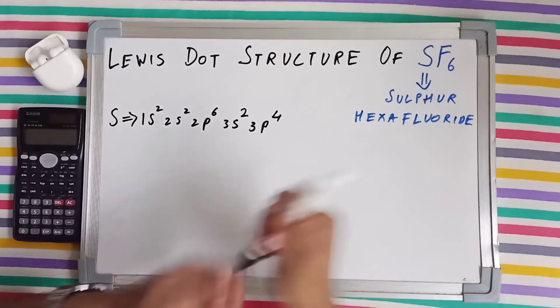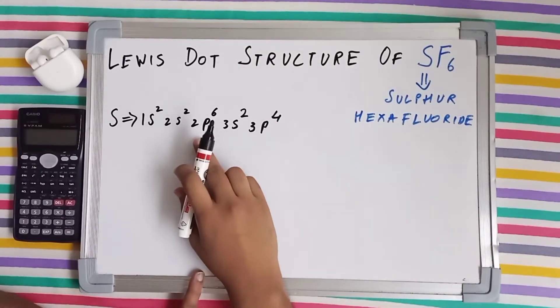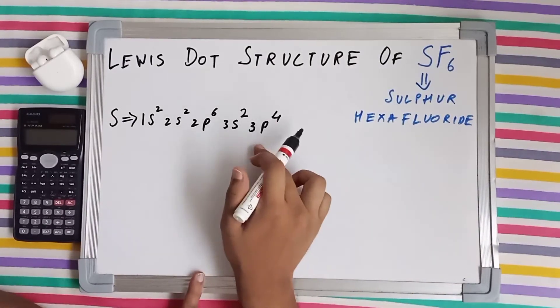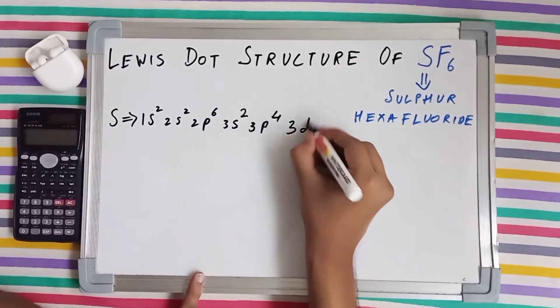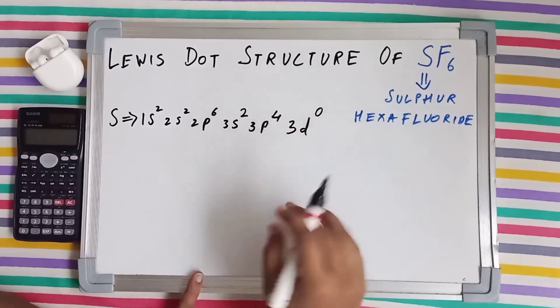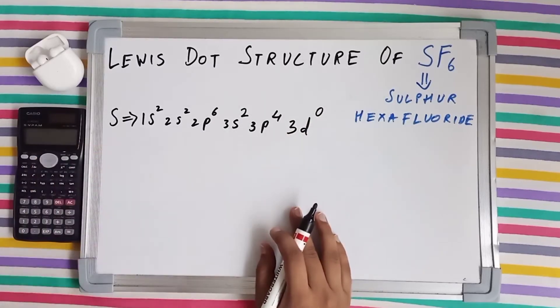The electronic configuration of sulfur is 1s², 2s², 2p⁶, 3s², 3p⁴. But in addition to this it also has a vacant 3d subshell because it is a third period element.